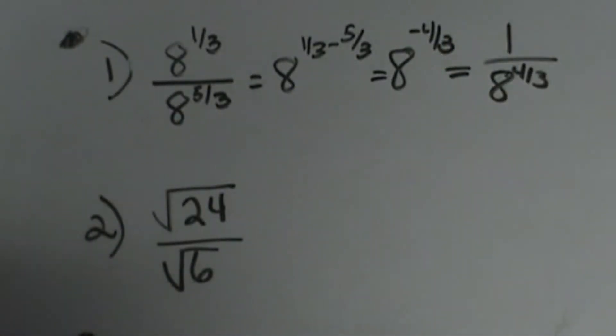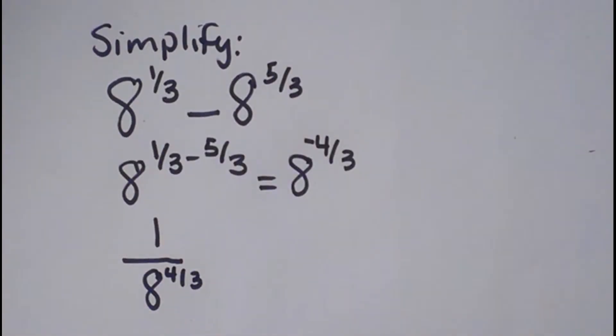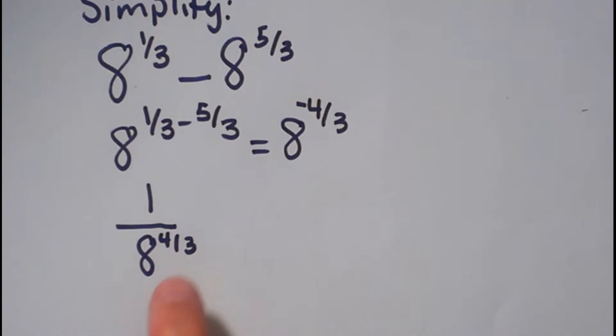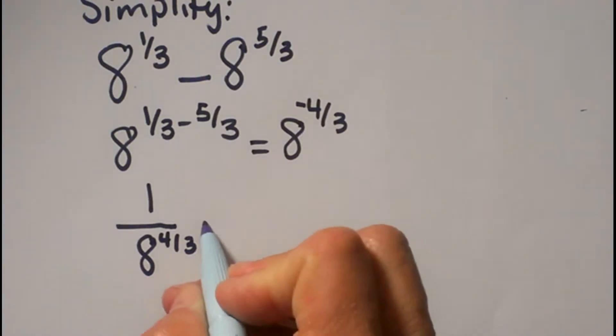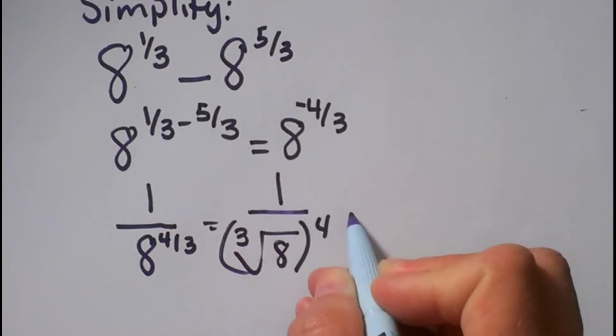Now we're going to talk about how to clean that up later, but that's what it means—it needs to be a positive exponent. Now this simplifies because we have a cube root of 8. So you can think of this as the cube root of 8, all to the 4th power, all over 1.